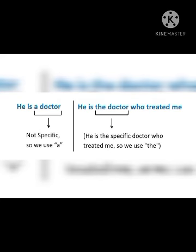Another example: 'He is a doctor' — we are talking about any doctor in general, so we use A. We use A here because D is a consonant, and we are not specifying which doctor. When we talk about things in general, we use the indefinite articles A and AN.